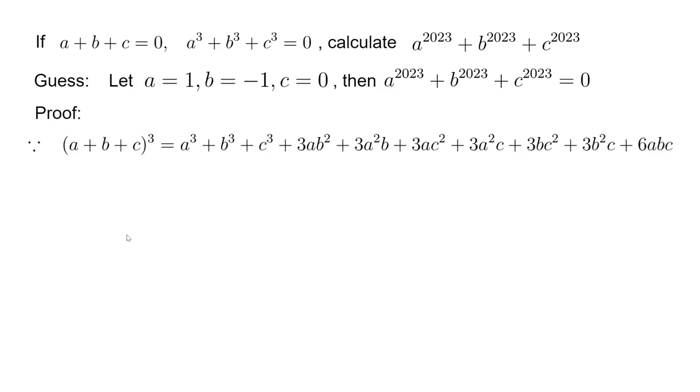Now for abc, this is a permutation. You can take a from any of the three items, then take b from the remaining two items, and then take c from the remaining one. So this is just a permutation: 3×2×1. There are six possibilities. That's how we get this equation.